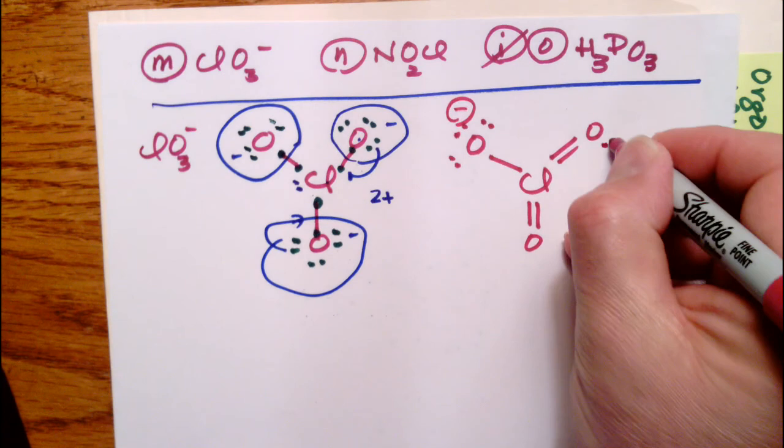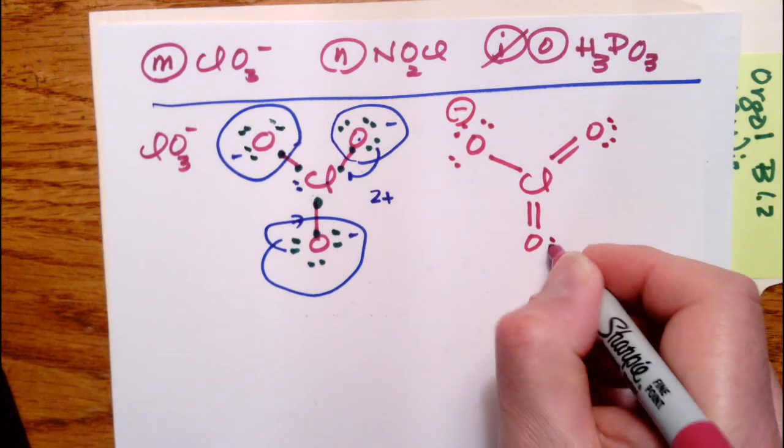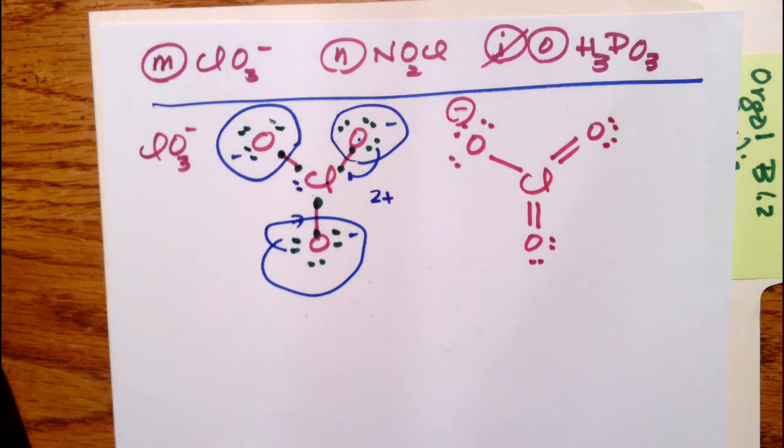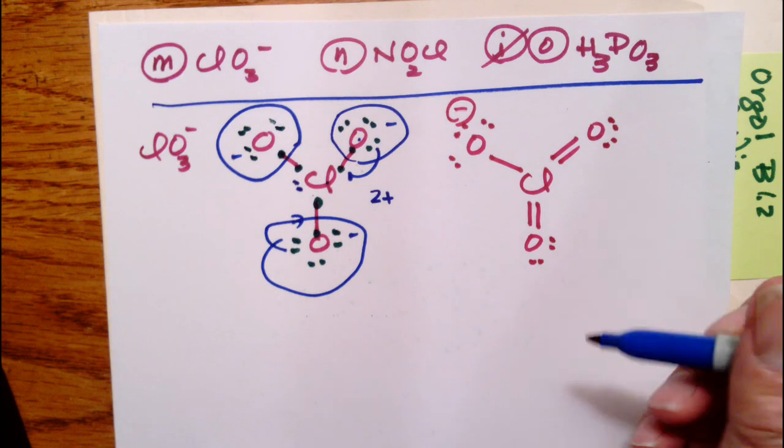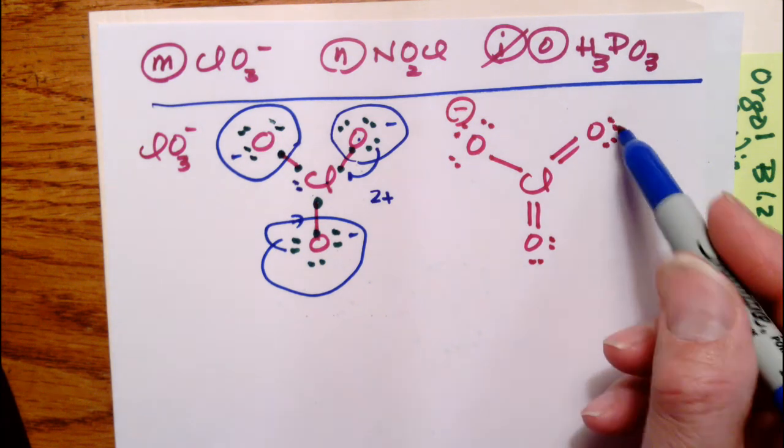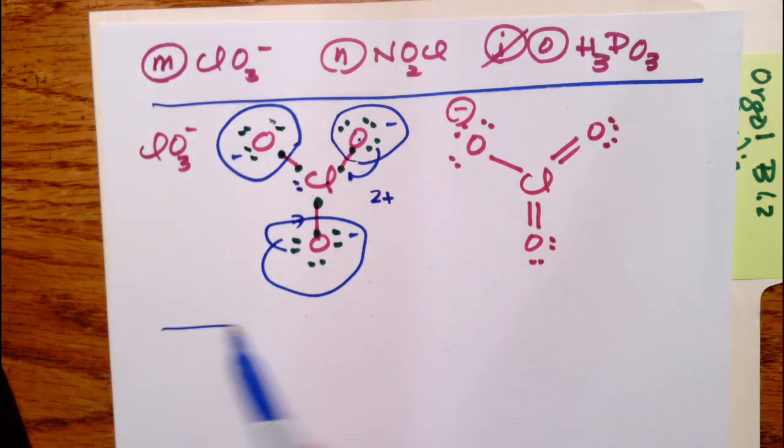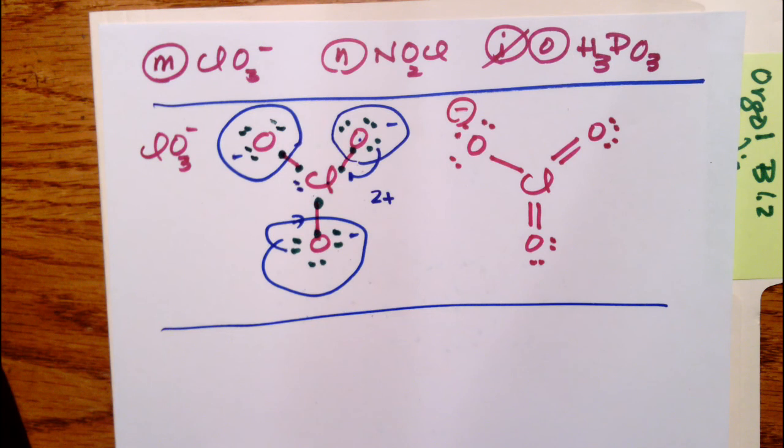So this would have six. So everybody is now happy. Chlorine has more than eight, but that's okay. And there is only one negative charge on the oxygen. The other two oxygens do not have any charge because you have eight electrons on each double-bonded oxygen and six on the single-bonded one. So that's the structure for ClO3-.